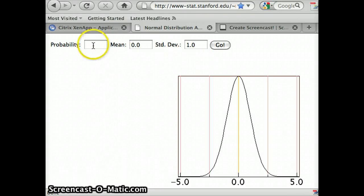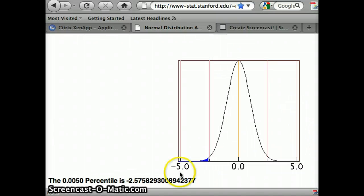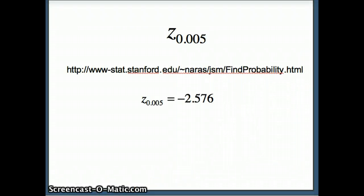And what does it tell us? It tells us that value is negative 2.5758. So my z alpha by 2 here is about negative 2.576, and we're going to go ahead and use that in our computation.